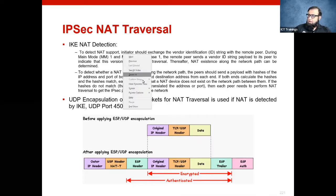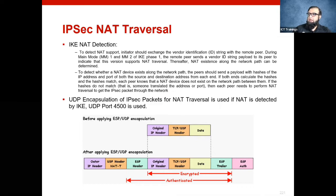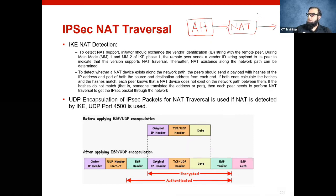We have seen that IPSec has issues when it comes to NAT. We concluded that if you are using the Authentication Header and passing AH traffic through NAT, this is not possible — your traffic will break the hash value.